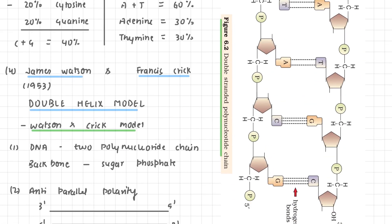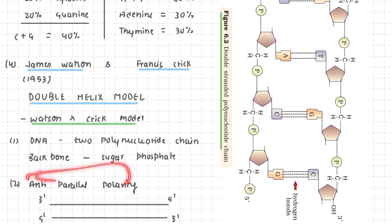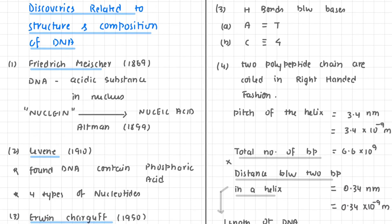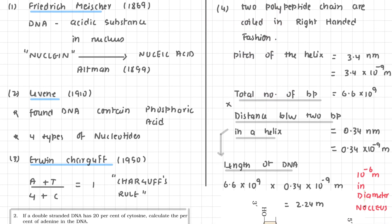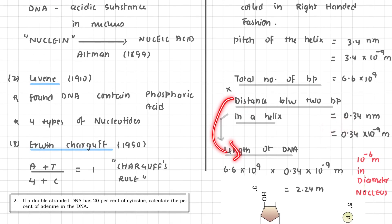Today we discussed the Watson and Crick model: DNA is made of two polynucleotide chains, the backbone is formed by sugar and phosphate, nitrogen bases form the internal structure, complementary base pairing — AT with double hydrogen bond, CG with triple hydrogen bond — anti-parallel polarity of 3' to 5' and 5' to 3'. We covered the pitch of the helix (3.4 nm), total base pairs (6.6 × 10⁹), distance between base pairs (0.34 nm), and the length of DNA calculated as approximately 2.24 meters.